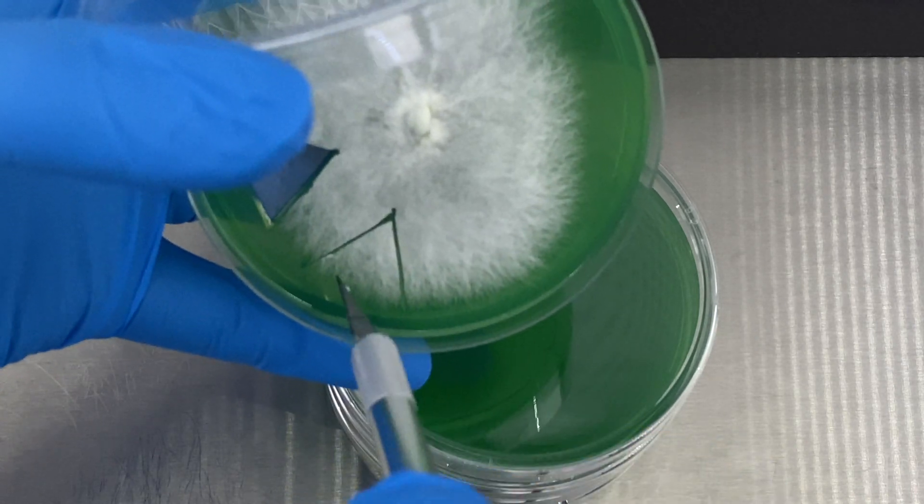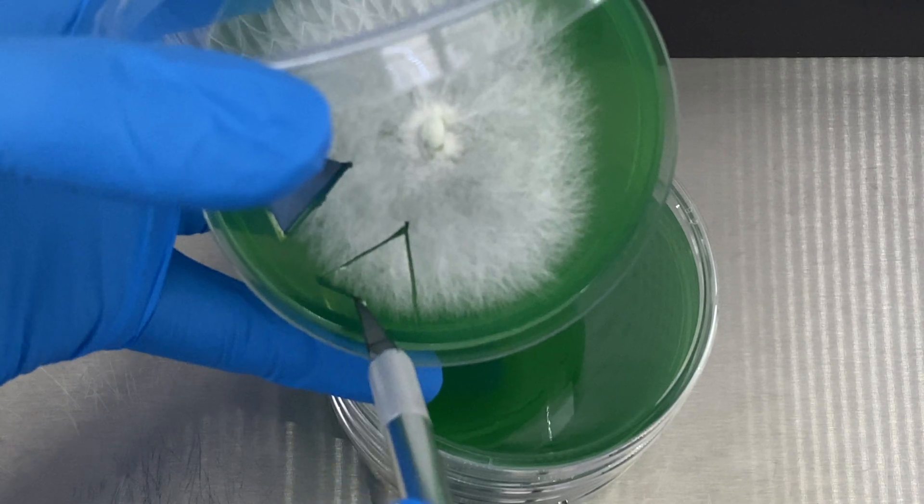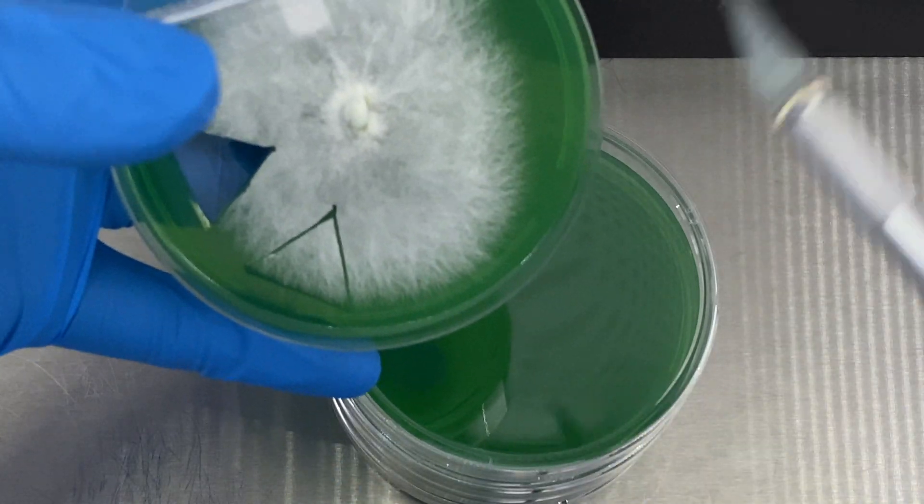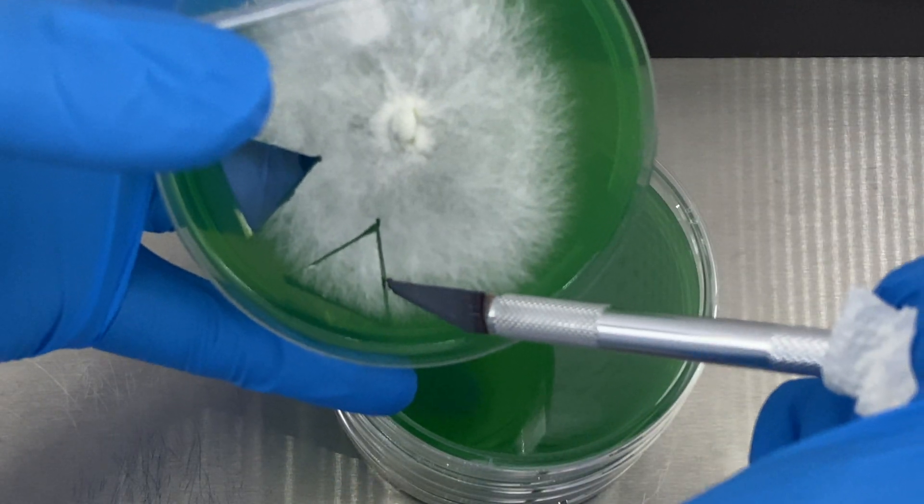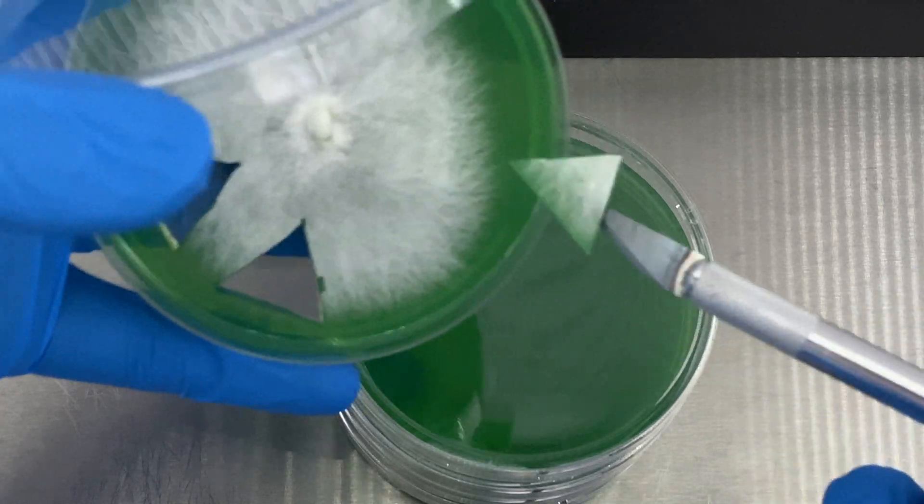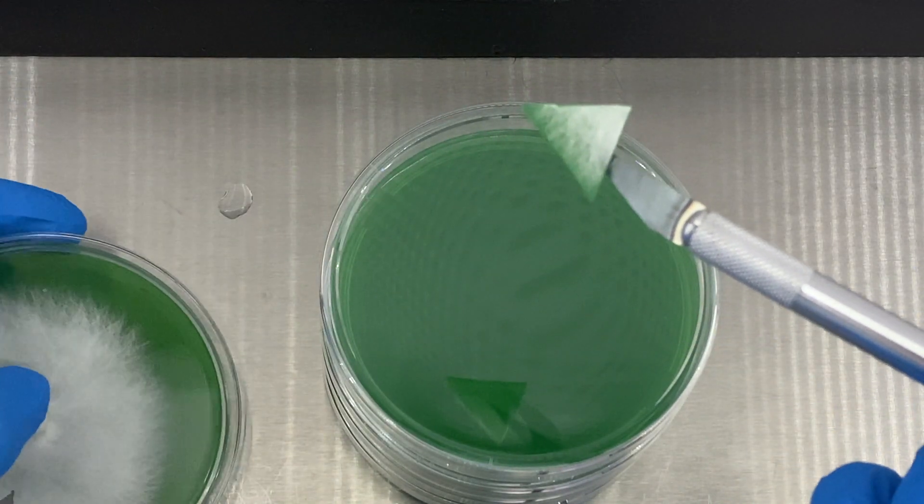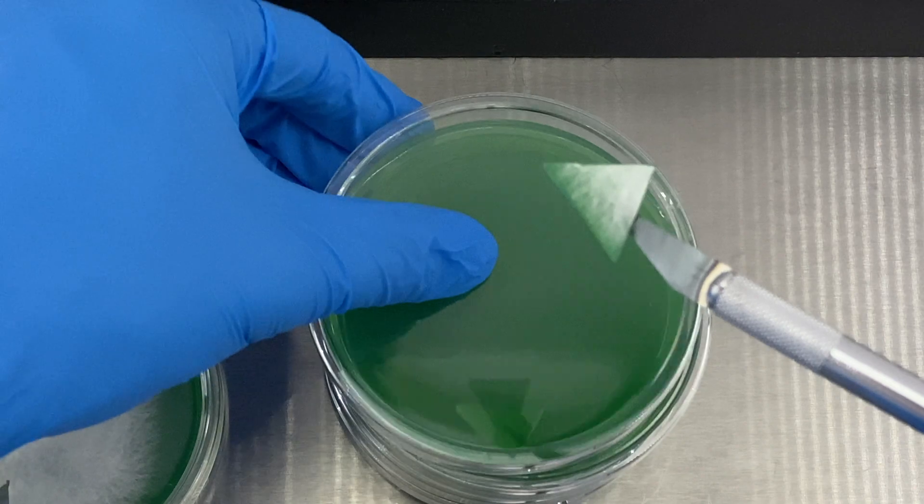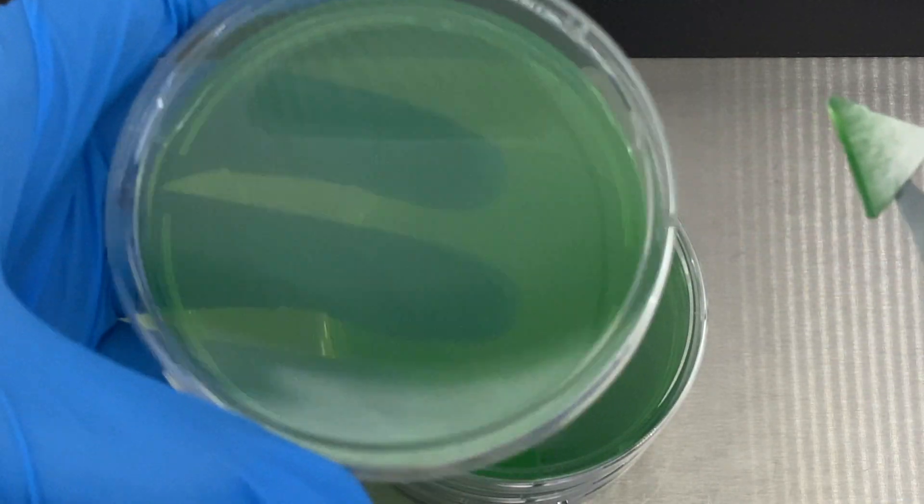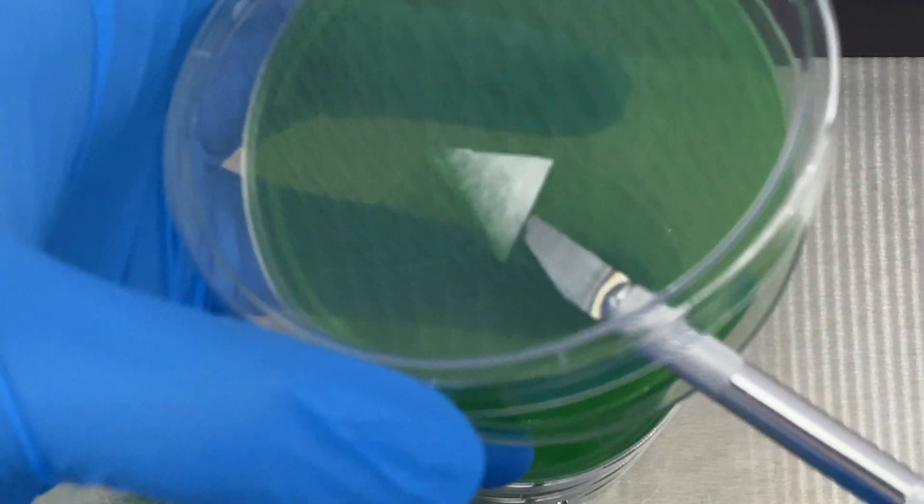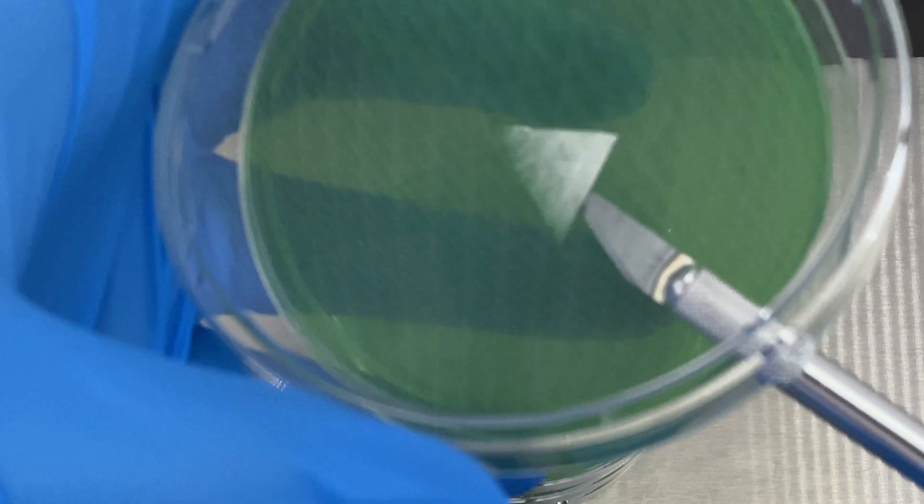We're going to follow the similar process where we're going to be doing a triangle shape coming from the inside of the culture until the edge where it is colonizing. I try to go a little bit inward so I can pinch the triangle shape that I'm going to be transferring over to the next plate.